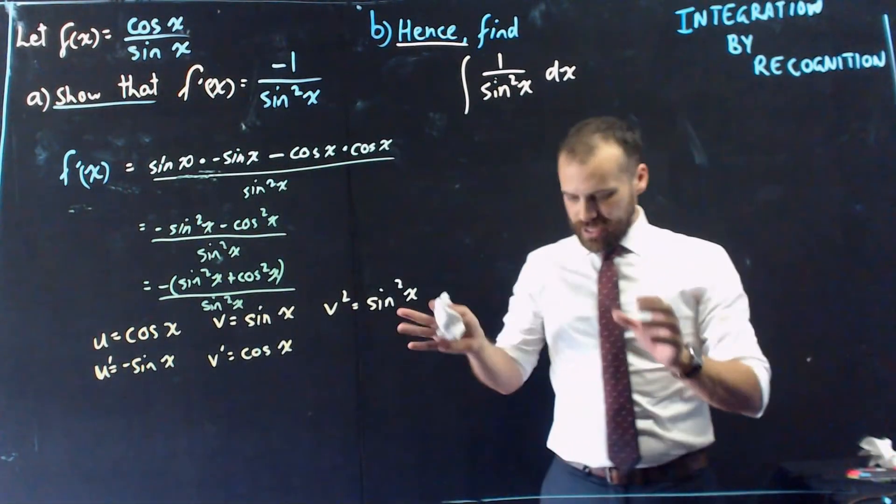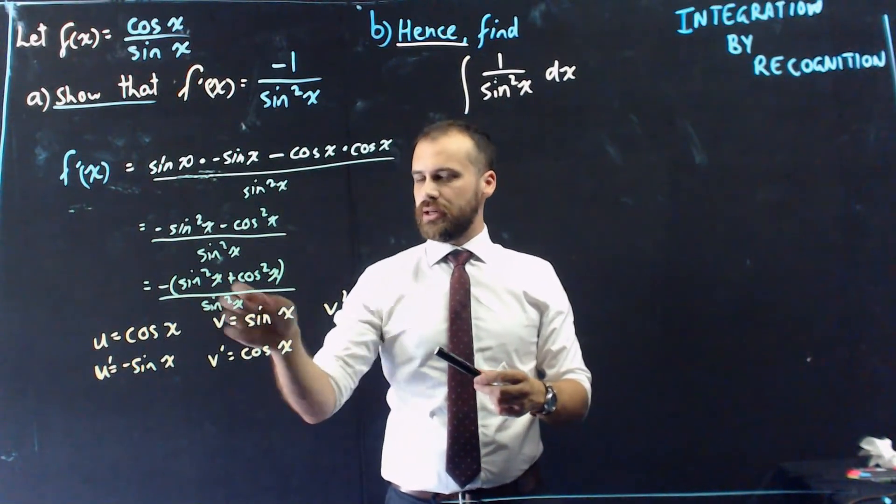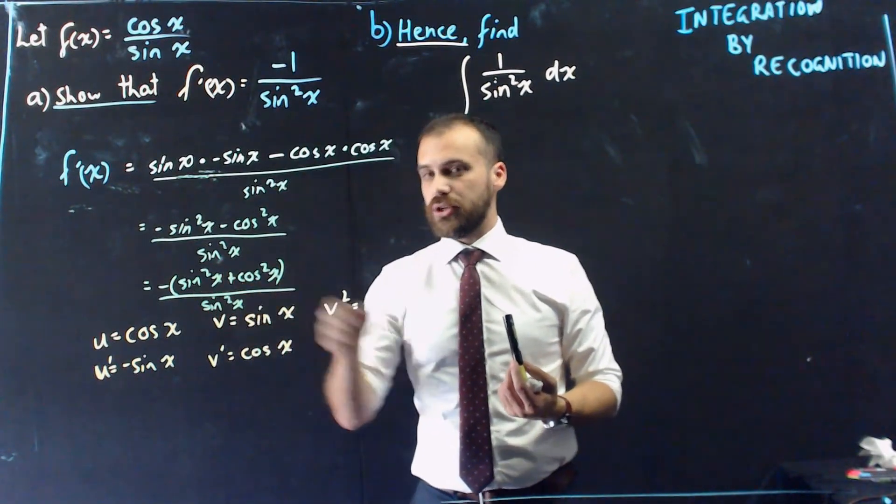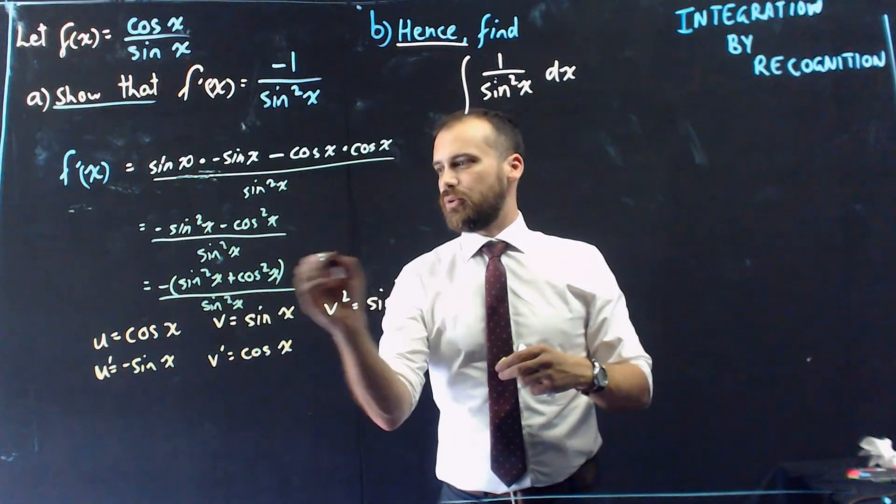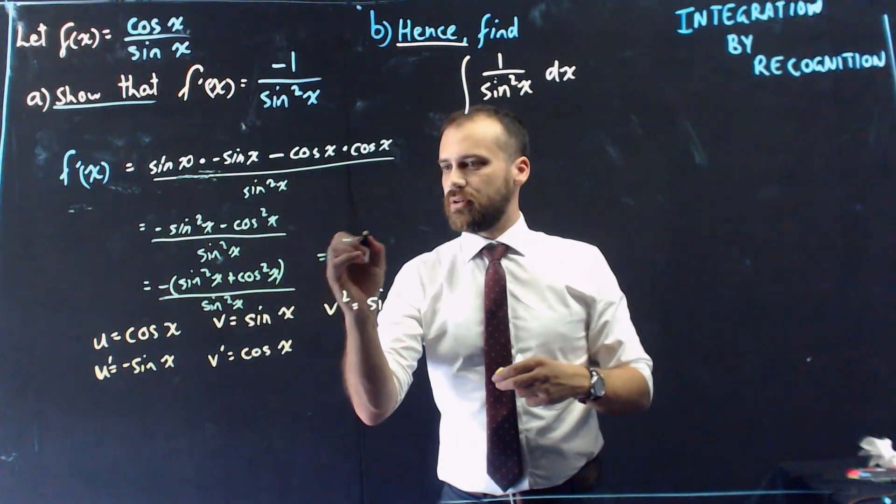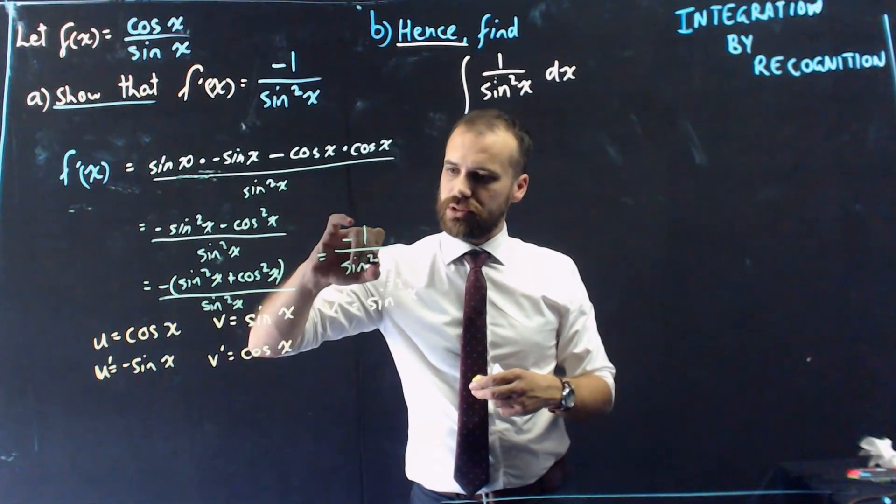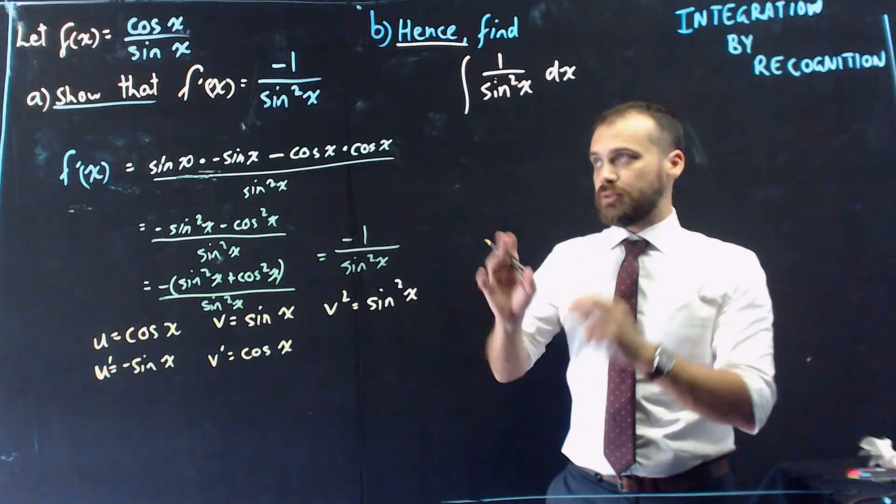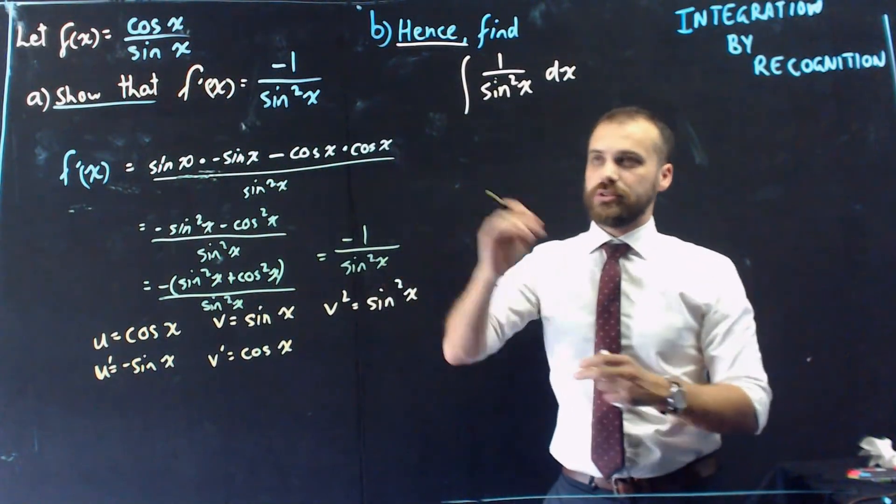All right, so that's pretty much it so far. We just need to get rid of this bit here. So you should remember your Pythagorean identity. Sine squared x plus cos squared x is equal to 1. So finishing this off, we have negative 1 over sine squared x. All right, so we've done part A. We've shown that the derivative of cos x over sine x is negative 1 on sine squared x.